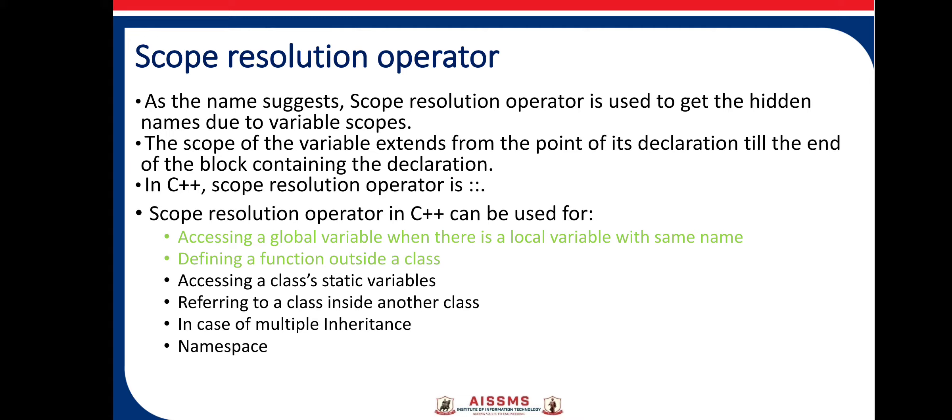It gives the extended scope to a particular variable from the block containing the declaration. In C++, the Scope Resolution Operator is shown with the double colon. In the previous lecture, we saw the usage of Scope Resolution Operator. The first one: accessing a global variable when there is a local variable with the same name. And the second one: defining a function outside a class.